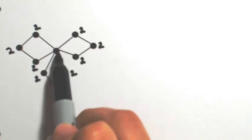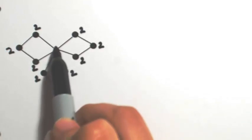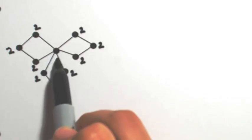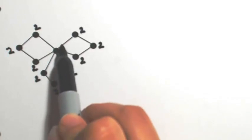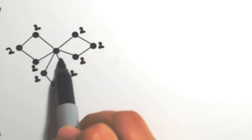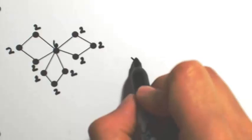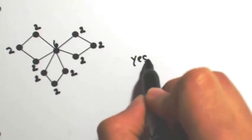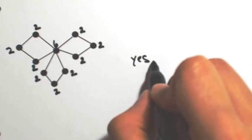So far so good — all of them are even. We just have one more to check, which is on the inside. I count one, two, three, four, five, six. So this one is even as well. All the degrees are even, so this one has an Euler circuit.